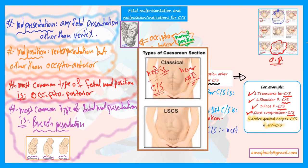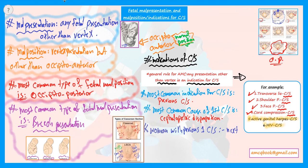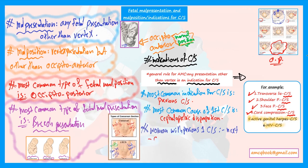However, if the first caesarean section was a low segment caesarean section, then you can try normal vaginal delivery, though caesarean section is preferred. You can attempt normal vaginal delivery if all circumstances are good and there is no contraindication to vaginal delivery in that woman.